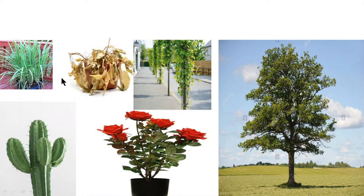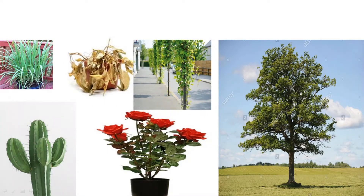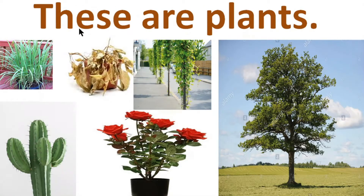In this picture we can see small plants, a die plant, and a climbing plant. And there is a big tree, a big plant. This one is a big plant, and here this one is a flowering plant, and this one is a kind of cactus. It is also a type of plant, a kind of plant. So all these are plants.